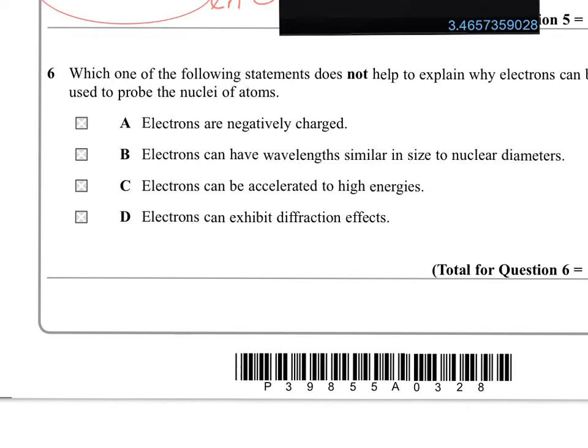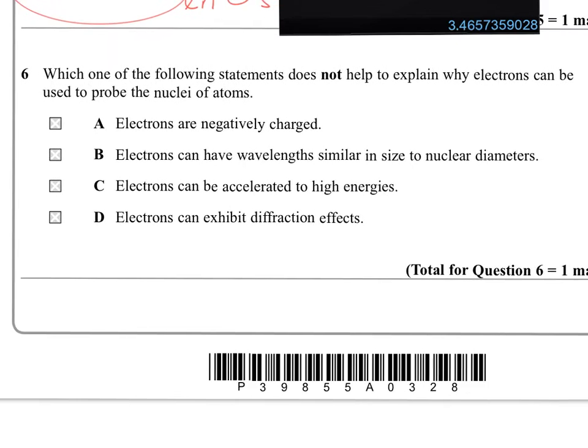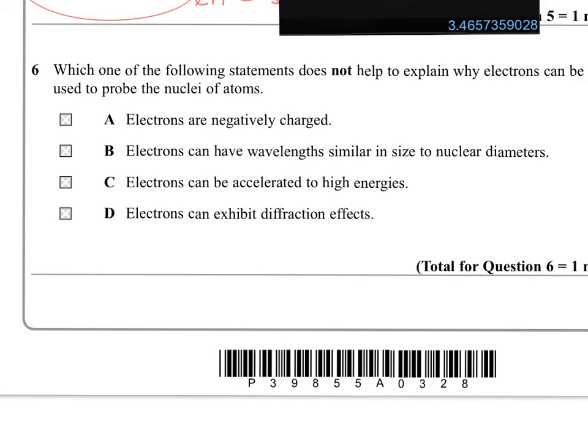Question 6. Which of the following statements does not help to explain why electrons can be used to probe the nuclei of atoms? So this is a wave property issue here.